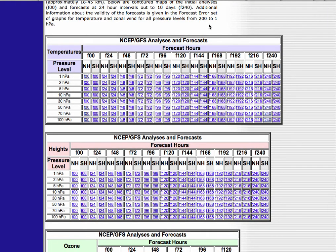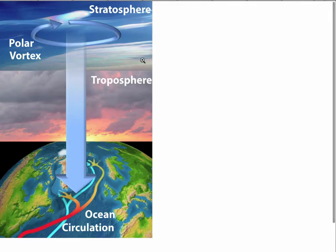Of course, there are other factors to consider, namely the stratosphere. This is a perfect illustration of how the stratosphere influences the North Atlantic Oscillation. There are some people who don't believe the stratosphere has an impact on the North Atlantic Oscillation — this would be incorrect. Now, it's not the primary driver, but it does have a significant influence. This illustration is from Science Daily.